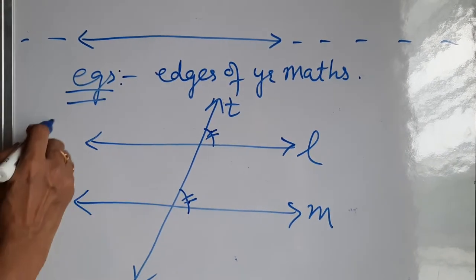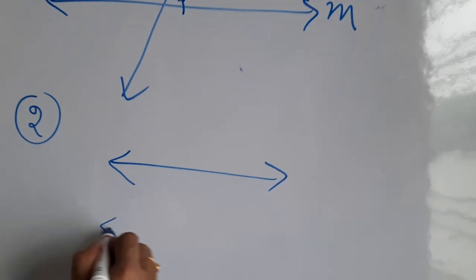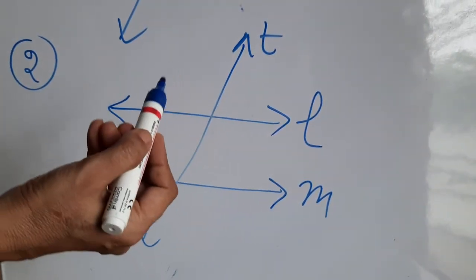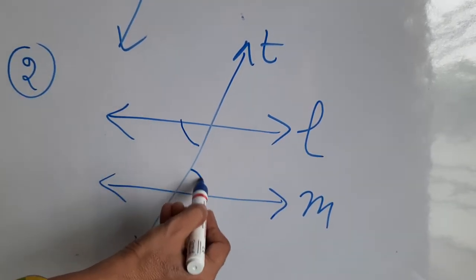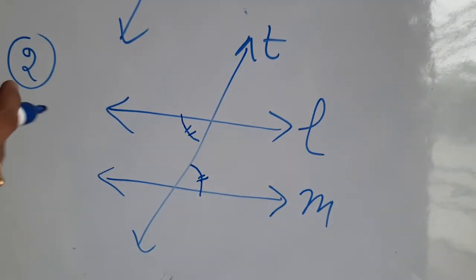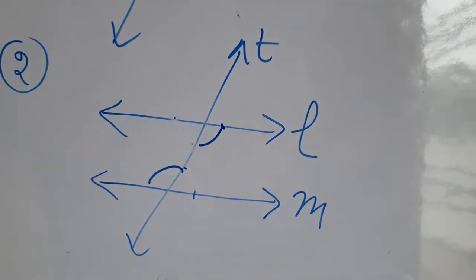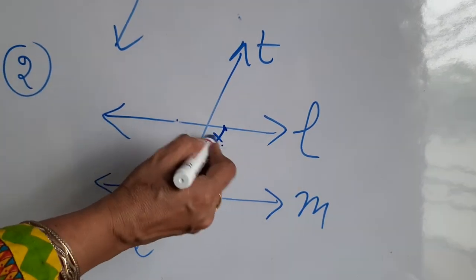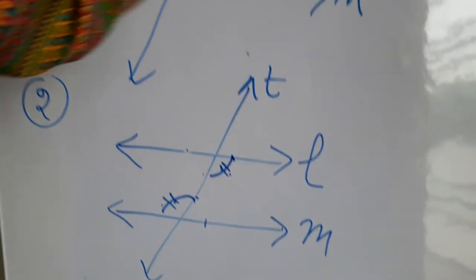The second fact is: if two parallel lines are cut by a transversal, then each pair of alternate interior angles is always equal. These two angles are alternate interior angles, and they will be equal. Another pair is also possible — this angle and this angle are also alternate interior angles and are always equal in measure.